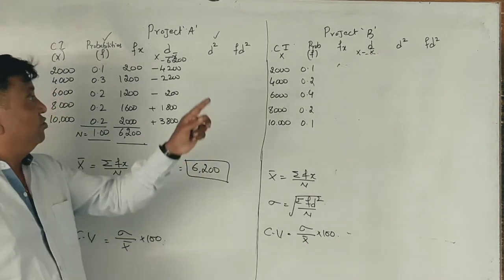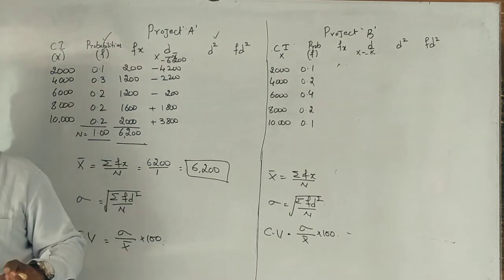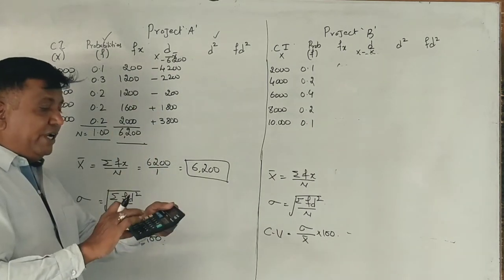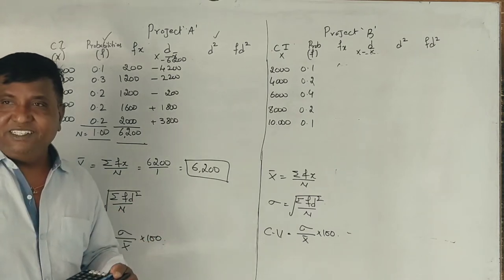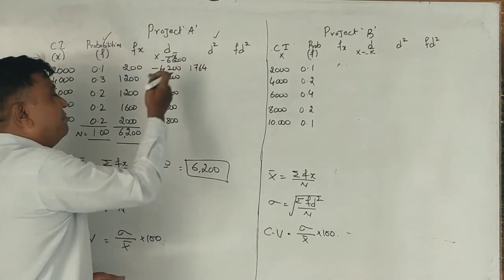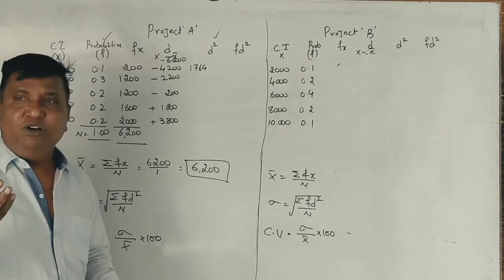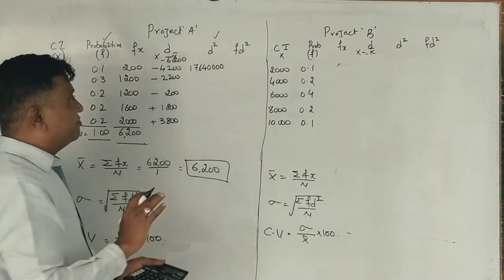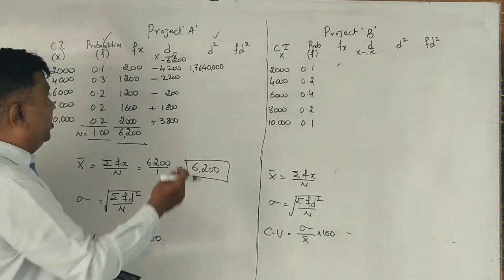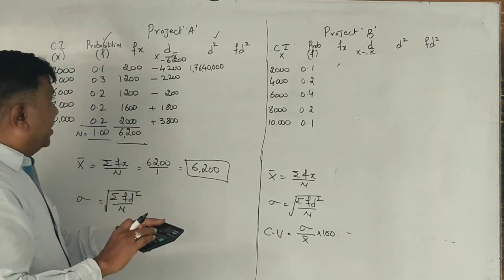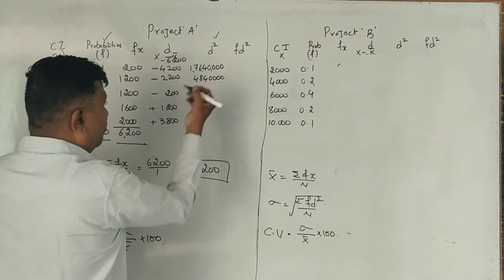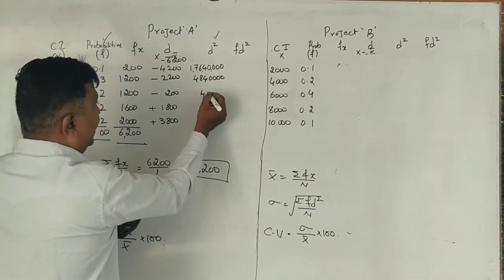These numbers multiplied: 42 into 42 equals 1,764. First value is 1,764 with zeros added: 1,764,000. Next, 22 into 22 equals 484. So 484 with zeros: 484,000. Then 2 into 2 equals 4, so 4,000.